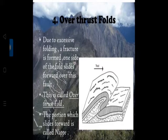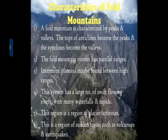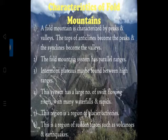The fold slides move forward over a fault - this is the over thrust fold. Characteristics of fold mountains: a fold mountain is characterized by peaks and valleys. The tops of anticlines become the peaks. Synclines form the valleys - the central part is at a lower elevation. The fold mountain system has parallel ranges.